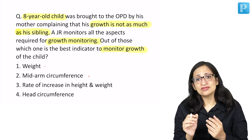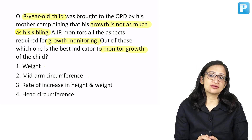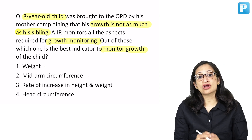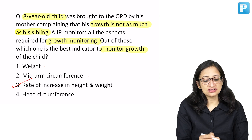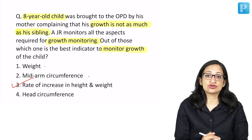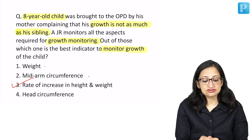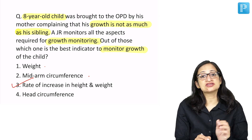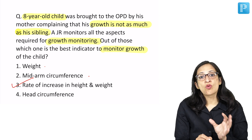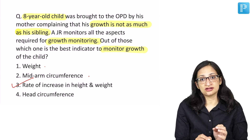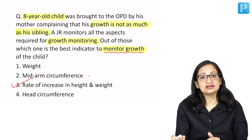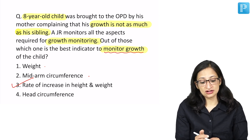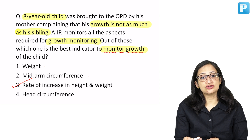A one-time estimate of any anthropometric parameter is not going to tell you much about how the child has been growing over time. The rate of increase in height and weight will be the best answer, because weight, mid-arm circumference, and head circumference taken at any given point only indicate the condition at that moment, not whether the child has been growing properly.